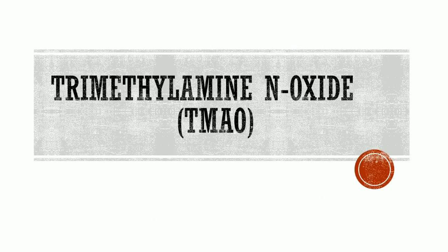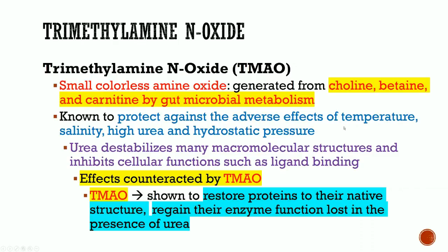Now I'll briefly go over TMAO and its role in cardiovascular disease and possible therapeutic treatments. TMAO is a small, colorless amine oxide generated from choline and carnitine by gut microbial metabolism. It is known to protect against the adverse effects of temperature, salinity, high urea, and hydrostatic pressure — certain sharks have demonstrated this. Urea destabilizes molecular structures and inhibits cellular functions such as ligand binding, and these effects are counteracted by TMAO. TMAO has been shown to restore proteins to their native structure and regain enzymatic function that was lost in the presence of urea.